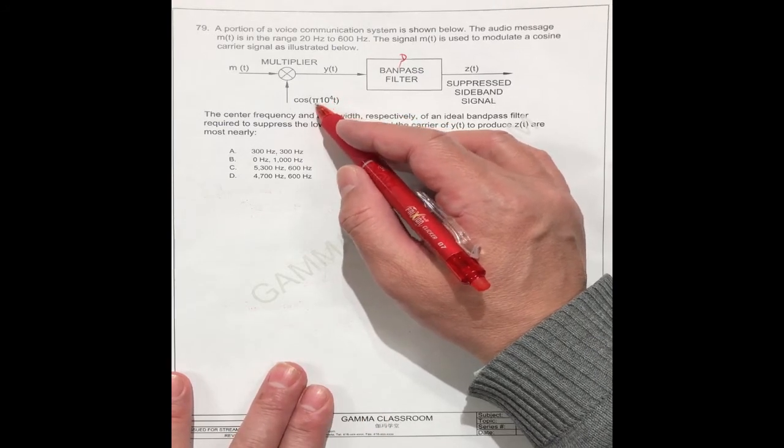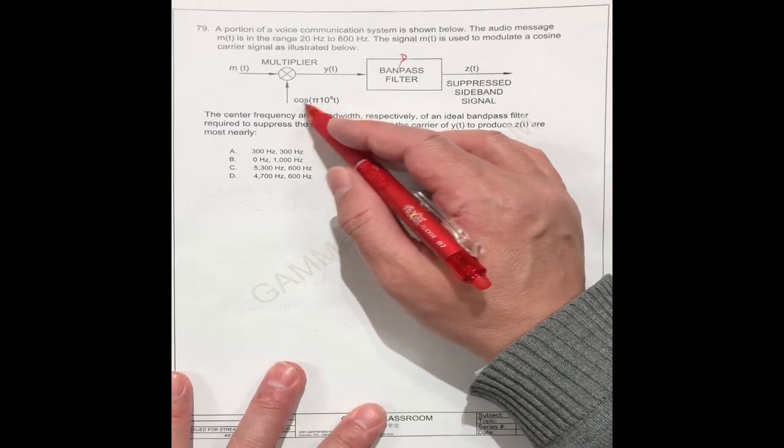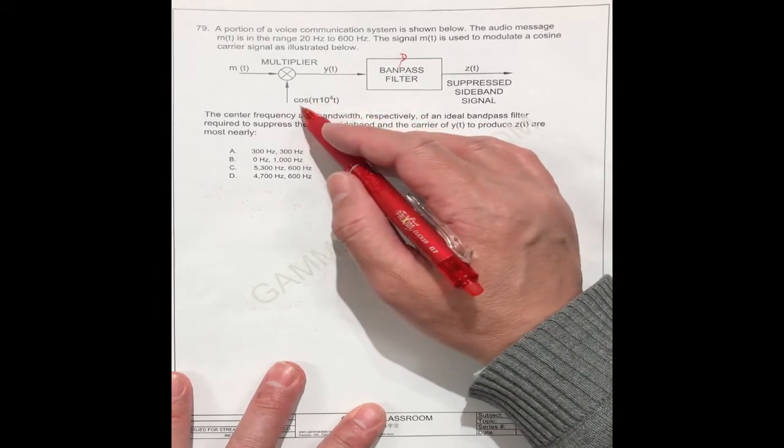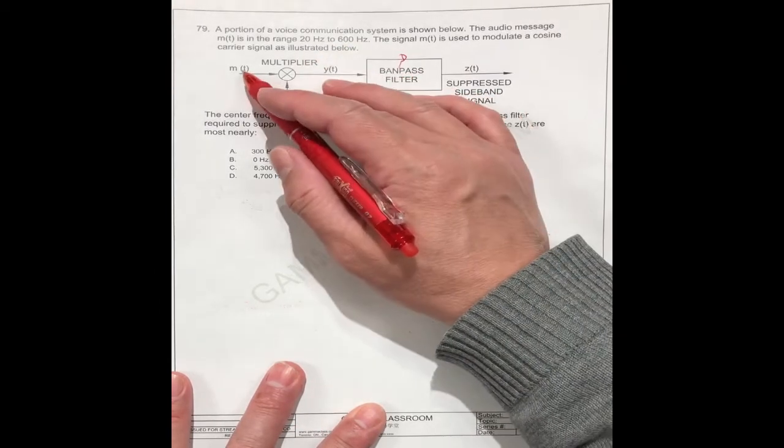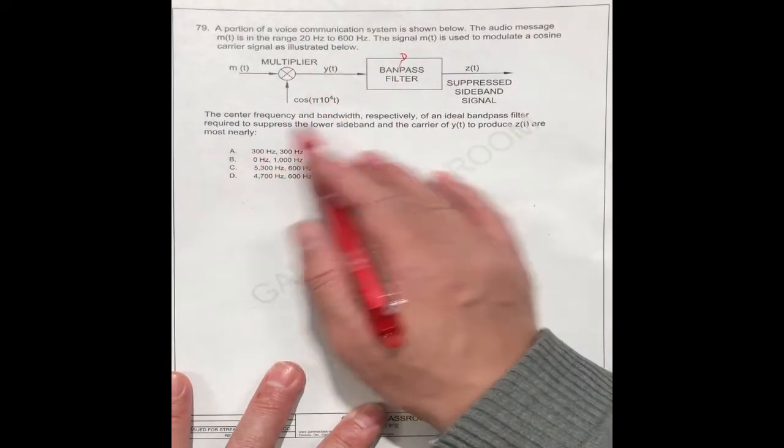We know the omega here is this number. So we can get the frequency for the carrier. We know the carrier's frequency, we know the message frequency range. Then we can answer this question.